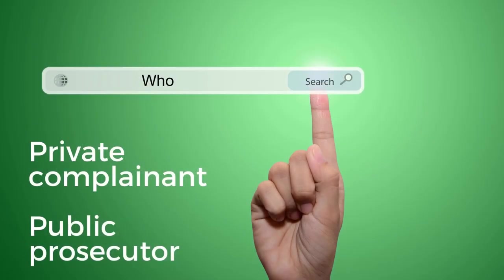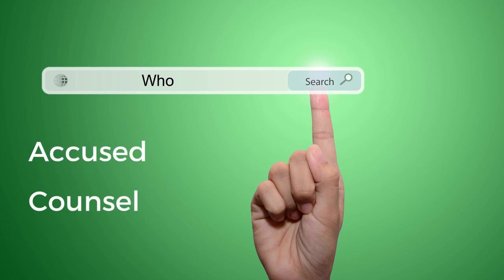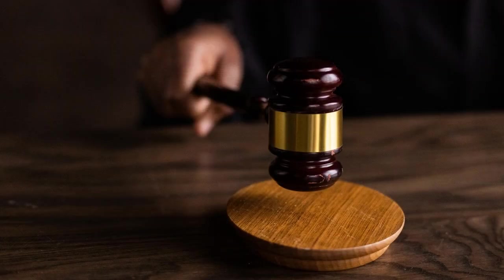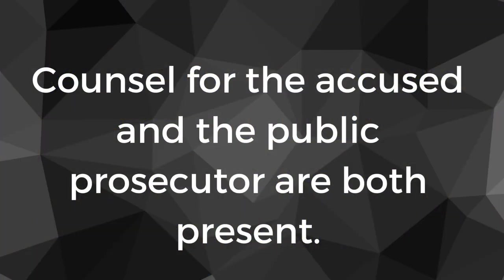Who should be present during pre-trial? Ideally, the private complainant, the public prosecutor, the accused, and his counsel should all be present. What happens if the private complainant or the accused are absent? The court shall proceed with the pre-trial despite the absence of the accused and/or private complainant, provided two conditions are met: one, they were duly notified of the pre-trial; and two, counsel for the accused as well as the public prosecutor are present.